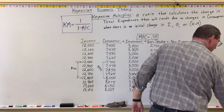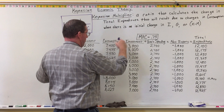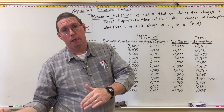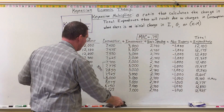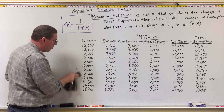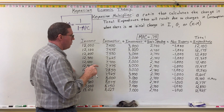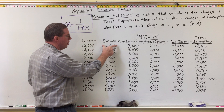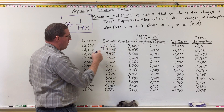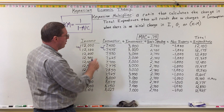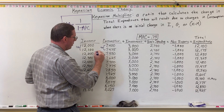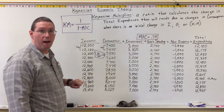For this particular circumstance, the marginal propensity to consume is 0.75. If you don't remember how to calculate the marginal propensity to consume, you can go back to that video. Basically, the marginal propensity to consume is the ratio of the change in consumption divided by the change in income. Here, consumption goes from 7,400 up to 7,475 — an increase of 75. Income goes from 12,000 up to 12,100 — an increase of 100. So 75 divided by 100 equals 0.75.